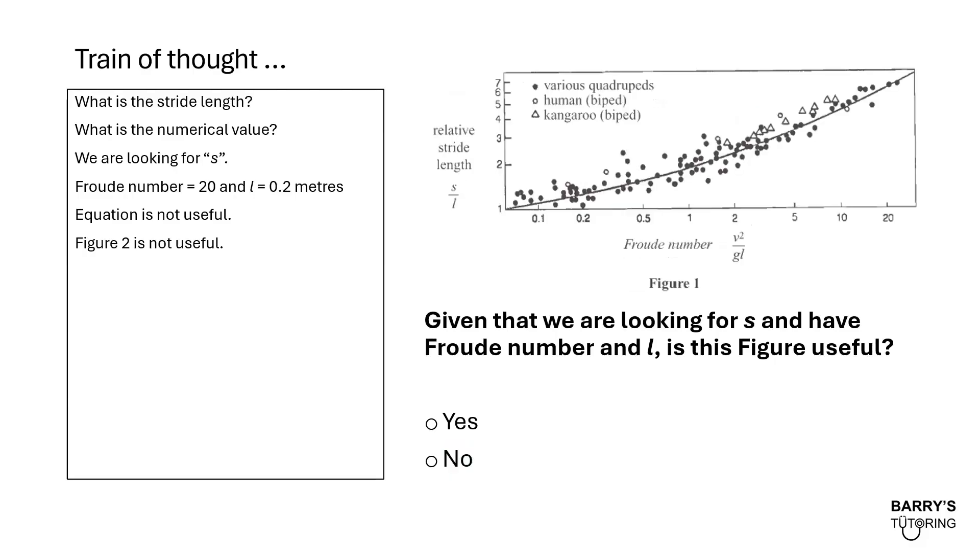How about figure 1? Does this look useful? Yes, it is definitely useful because it has S and L. If you look at the y-axis, there's references to both S and L. And on the x-axis, we have the Froude number. So all of the things that we either are looking for or we have are on this figure. This figure is most likely our best place to go to.